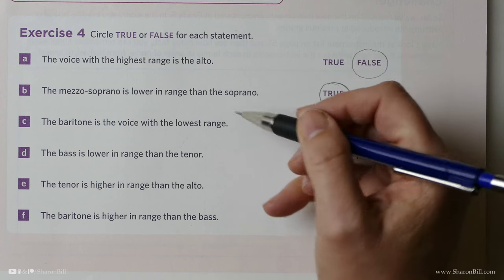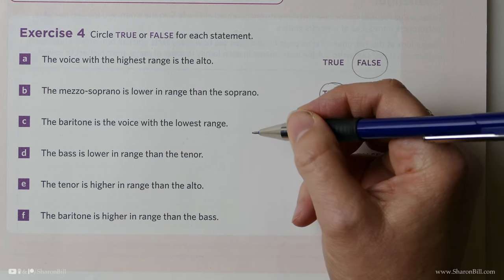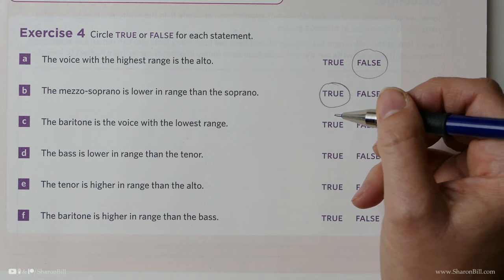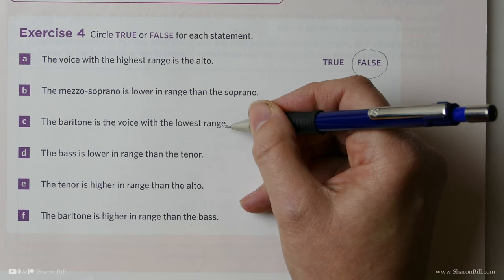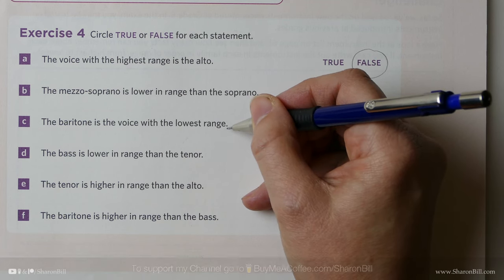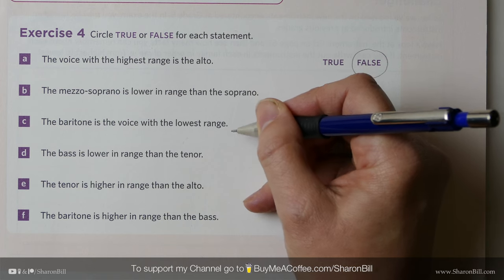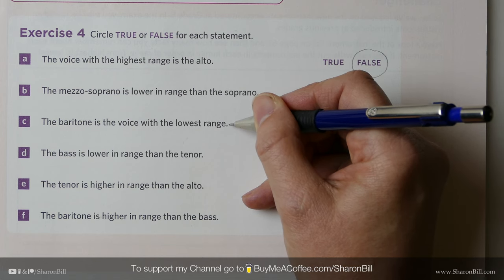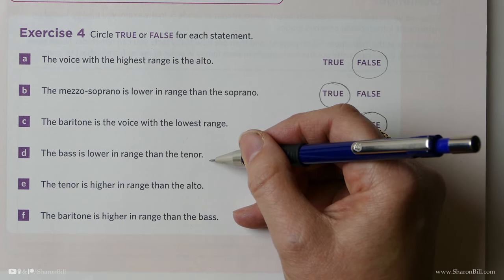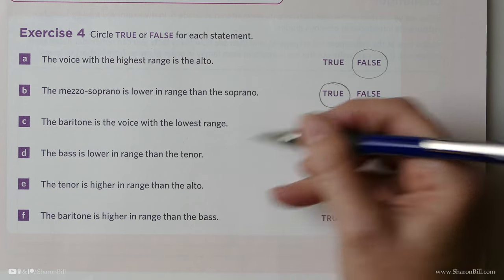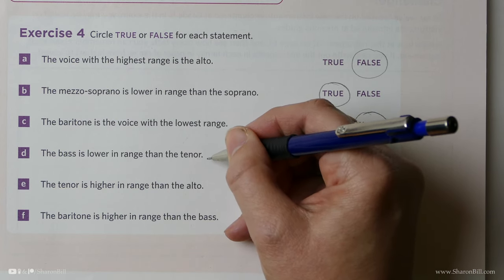Is it true or is it false that the baritone is the voice with the lowest range? Well, that's false, because the bass is the lowest note, and that makes perfect sense if you think bass, bass clef is the lowest clef, so the bass voice is the lowest voice. Is it true or is it false that the bass is lower in range than the tenor? Yes, that is true, because the bass is lower than all of the voice parts. It's the bass, it's the lowest.